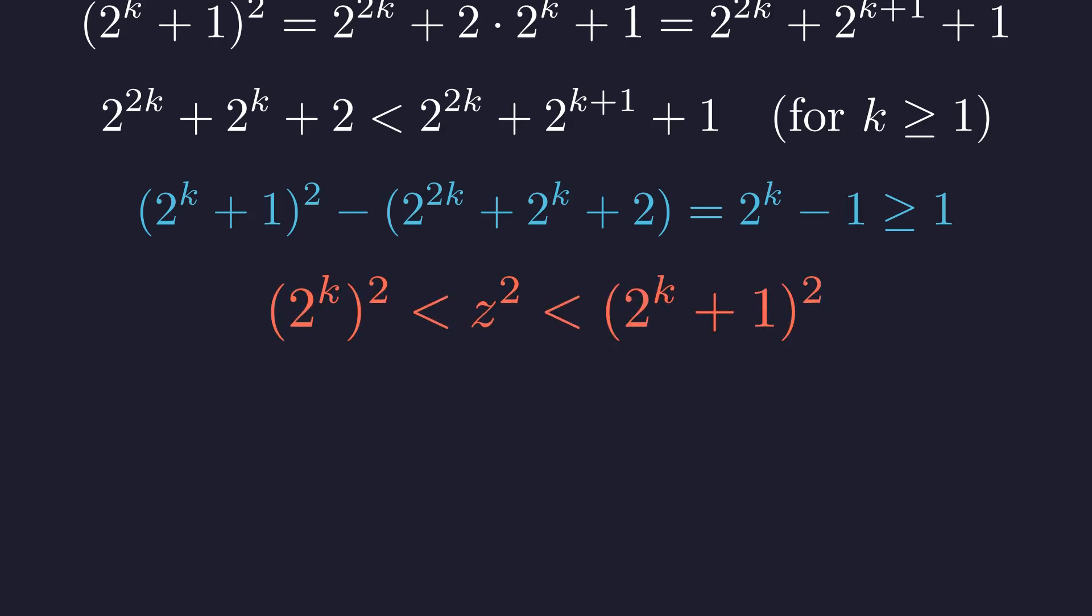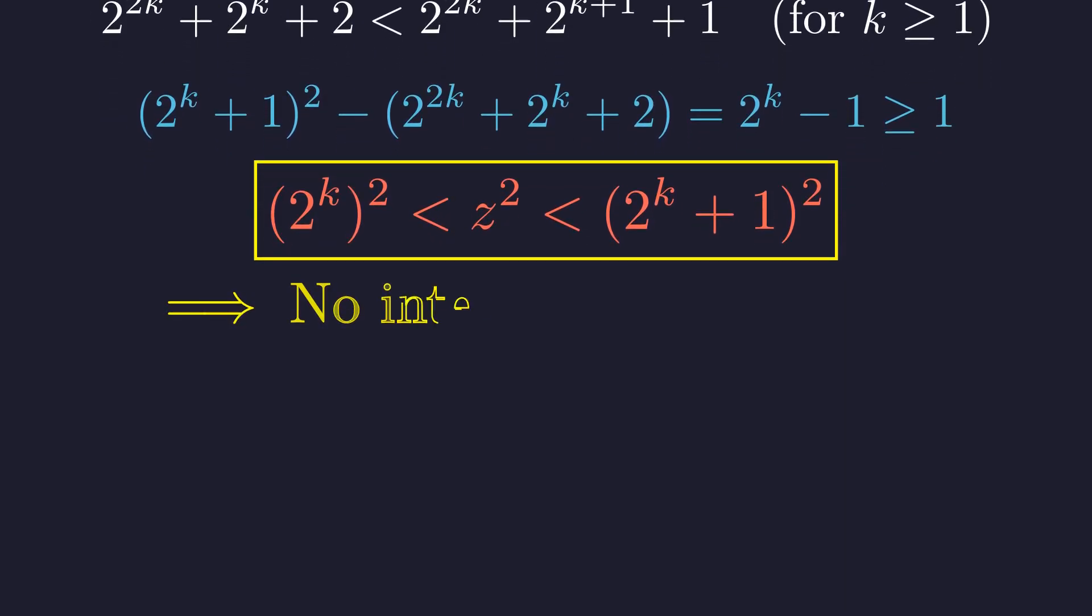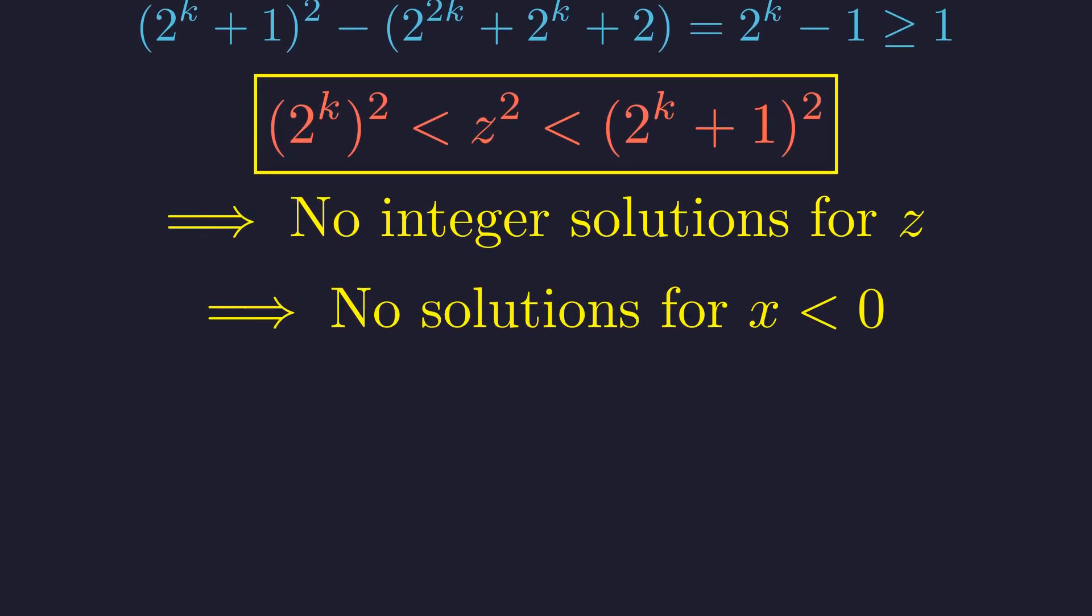This means z squared is squeezed between two consecutive perfect squares. And here's the crucial insight. An integer perfect square cannot exist between two consecutive ones. This is a contradiction, which means our initial assumption was wrong. Therefore, there are no solutions when x is a negative integer.